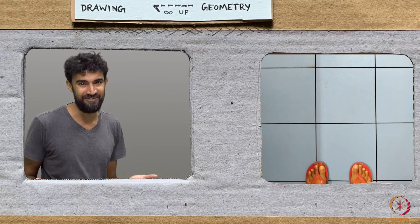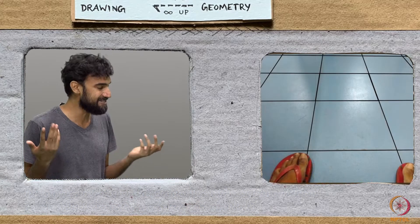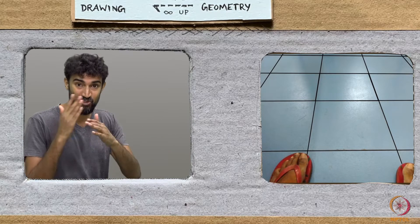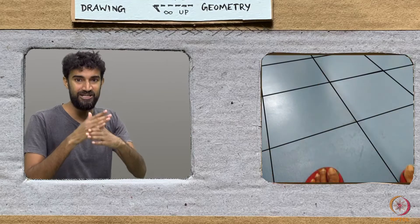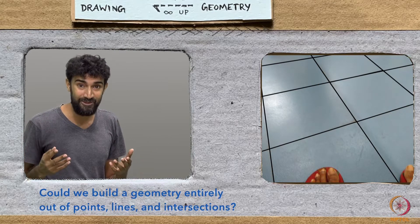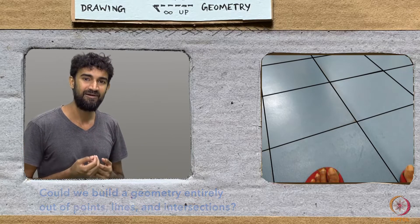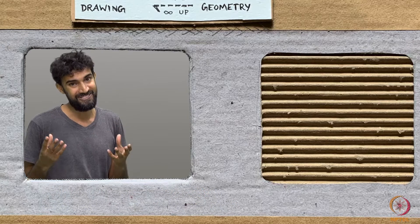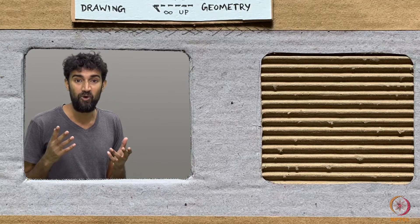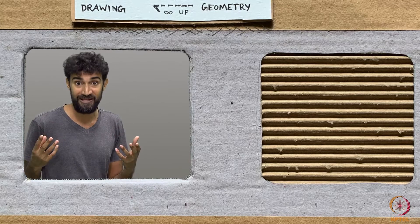Well, as we shift perspective, points seem to remain points, and lines seem to remain lines. And even intersections between lines remain intersections. So, could we build a geometry entirely out of points, lines, and intersections? It would be a very basic geometry, but one that would be essential for knowing what changes and what stays the same when we shift perspective.